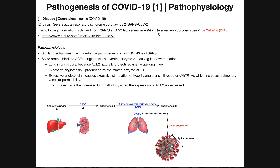A couple of things about the coronavirus. When we say COVID-19, we're actually talking about the disease that it causes, not the actual name of the virus. The disease name is coronavirus disease, COVID-19 for short. The actual name of the virus is severe acute respiratory syndrome coronavirus 2, abbreviated to SARS-CoV-2. So SARS-CoV-2 is the name of the virus, and coronavirus disease is the name of the disease it causes.